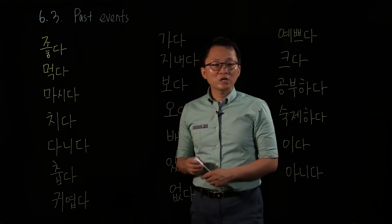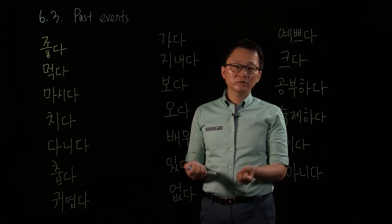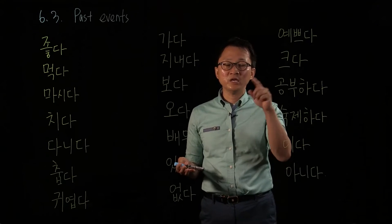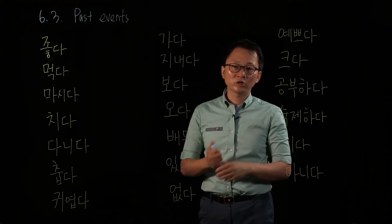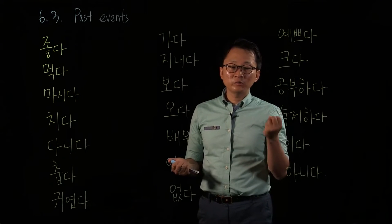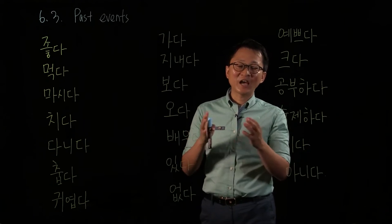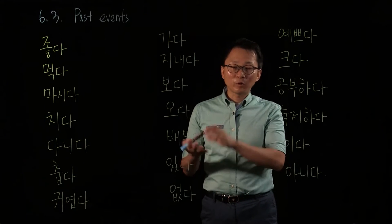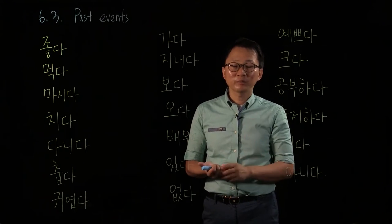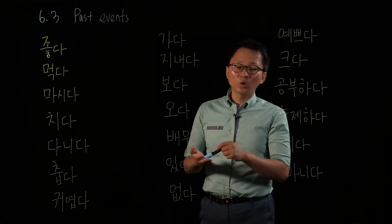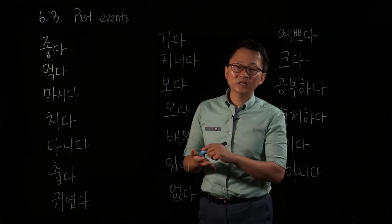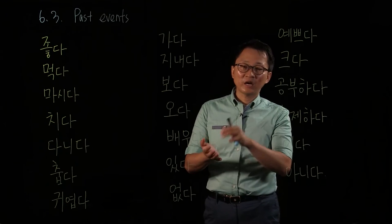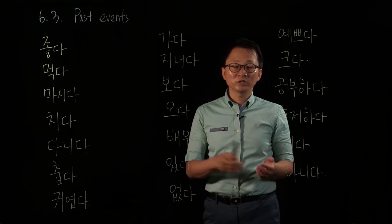Think about English verbs. English verbs have present form and past form. For the past form, we sometimes put -ED, or sometimes some verbs are irregular. But for the adjectives, we don't have past tense adjective forms in English. But Korean verbs and adjectives both have past tense form. So please remember this — in English, something 'was good' uses a past tense B-verb and then the adjective. But in Korean, adjectives can be conjugated into the past form.